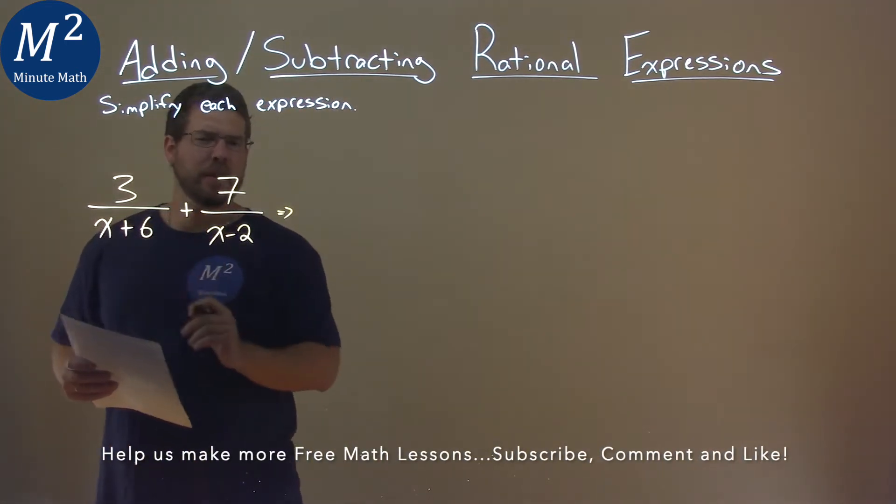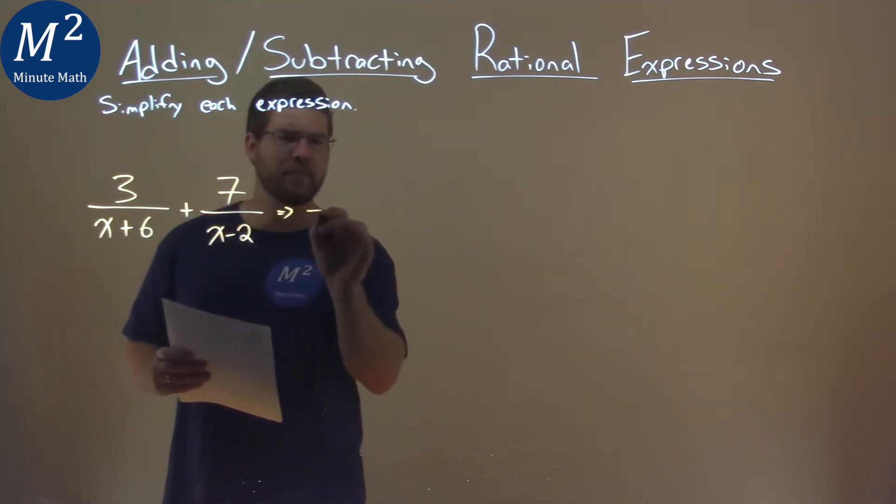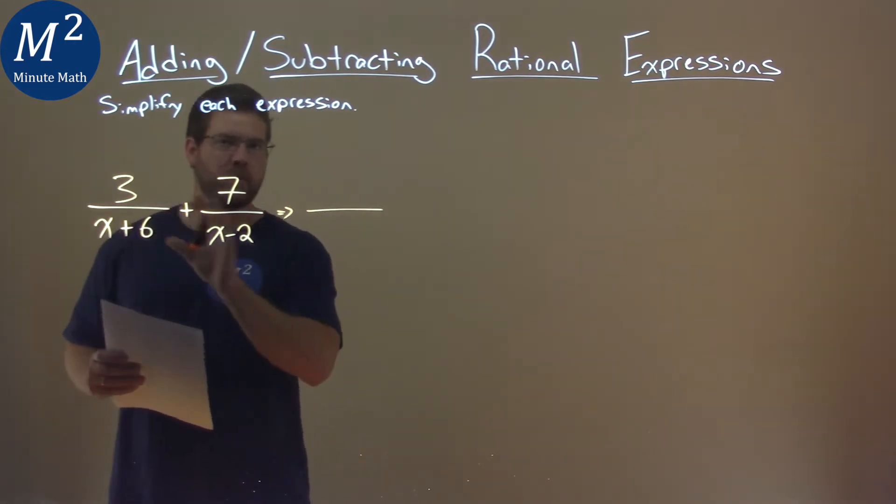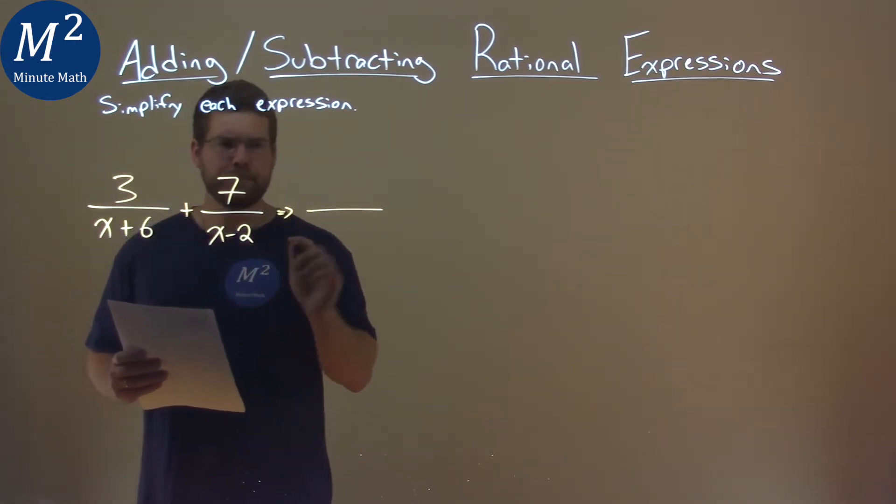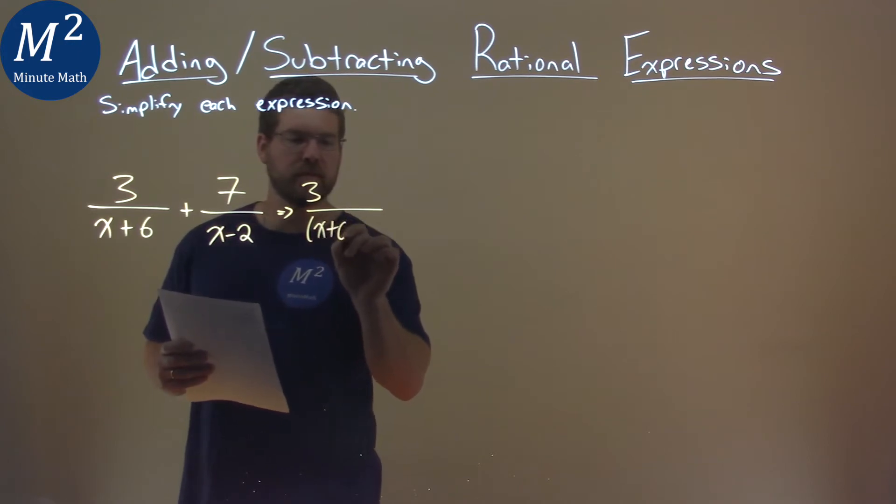Well, we don't have the same denominator here, so we need to find the same denominator for both fractions. We're going to create that. So I'm going to rewrite this 3 over x plus 6 here,